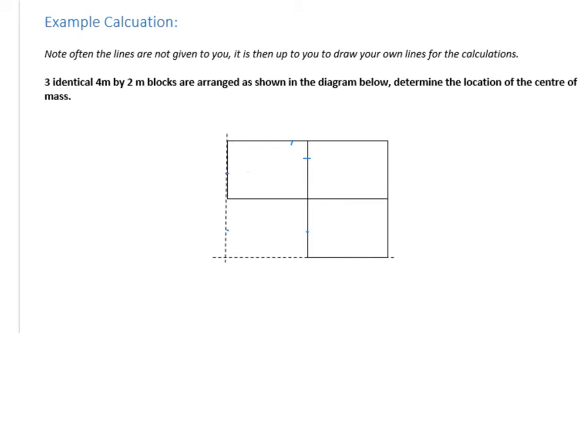All right, so let's have a look at this question. So in terms of the dimensions on this, I've drawn these dotted lines in here. You'll often have to do them for yourself. So we've got three identical 4 by 2 meter blocks. So these are the three blocks shown here. This longer side is 4 meters, this shorter side is 2. And we want to know the location of the center of mass. So if they're identical, that means they will have the same mass. So we know that's 4, we know that's 4, and we know that's 4, and that's 2, and that's 4 in there.